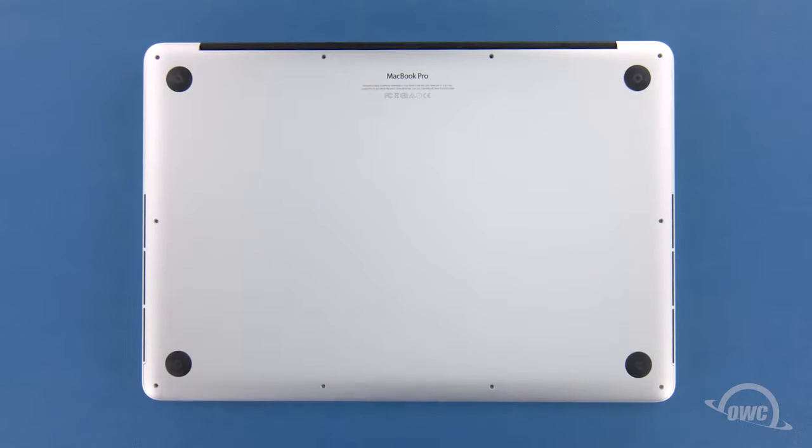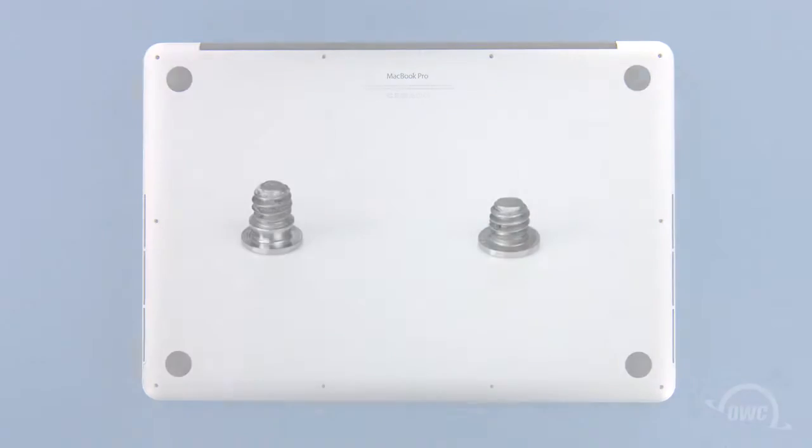We can now replace the screws that hold the bottom in place. There are two different screw types. The two screws without the collar on them are slightly shorter and need to be placed in the two center positions along the hinge edge.